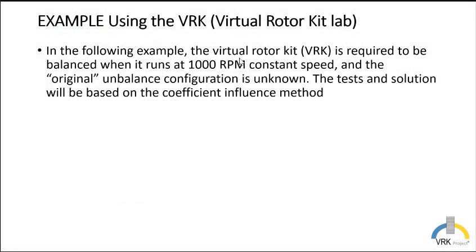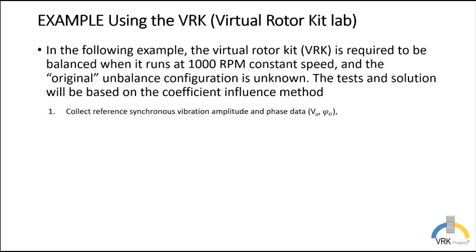In the following example the Virtual Rotor Kit is required to balance a rotor when it runs at 1000 rpm constant speed and the original unbalanced configuration is unknown. The test and the solution will be based on the coefficient influence method. The steps of these methods are the following. The first step is to do a reference run and we will collect original vibration due to the imbalance. We will collect amplitude and phase data and this is a measurement of the vibration we like to attenuate.